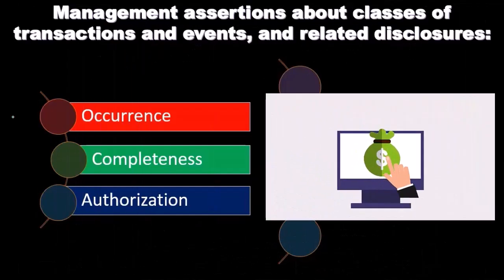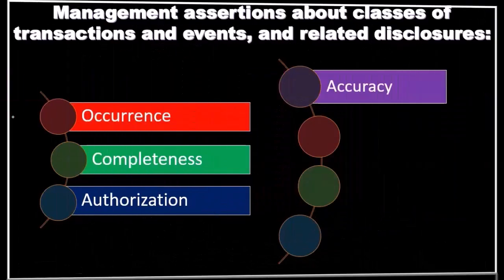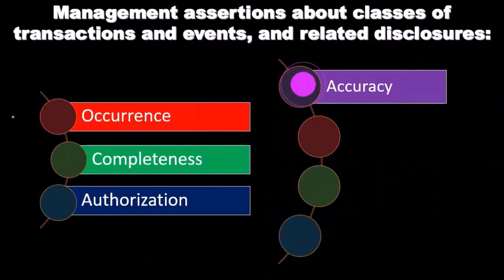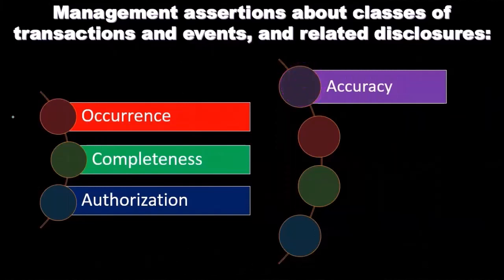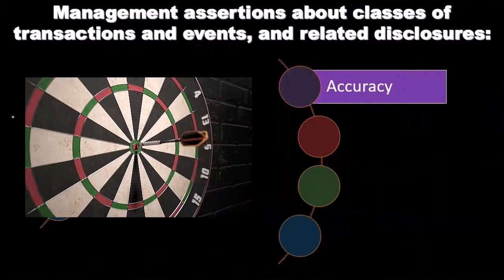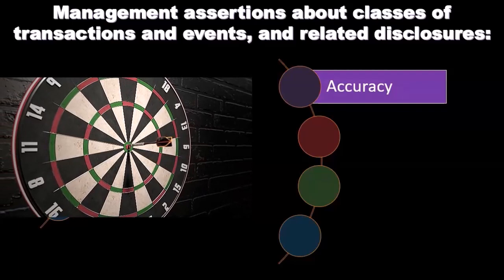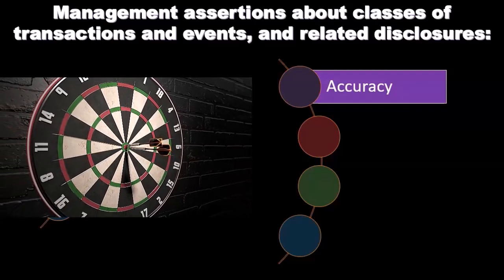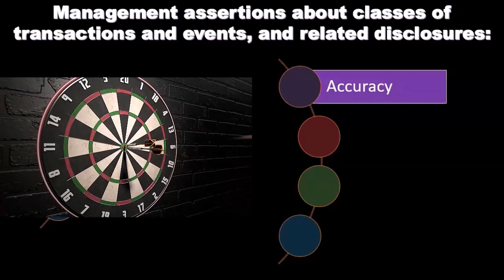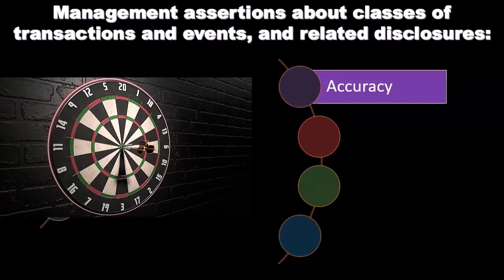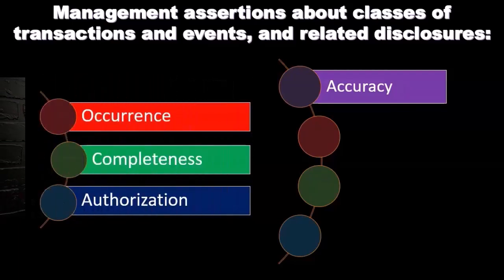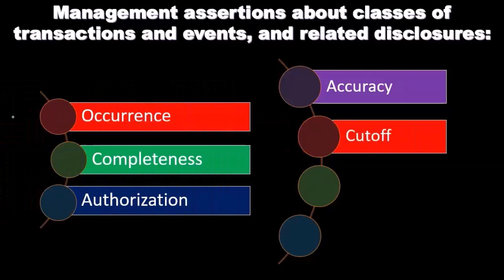Authorization: all transactions and events have been properly authorized. Accuracy: amounts and other data related to recorded transactions and events have been recorded appropriately, and related disclosures have been appropriately measured and described.